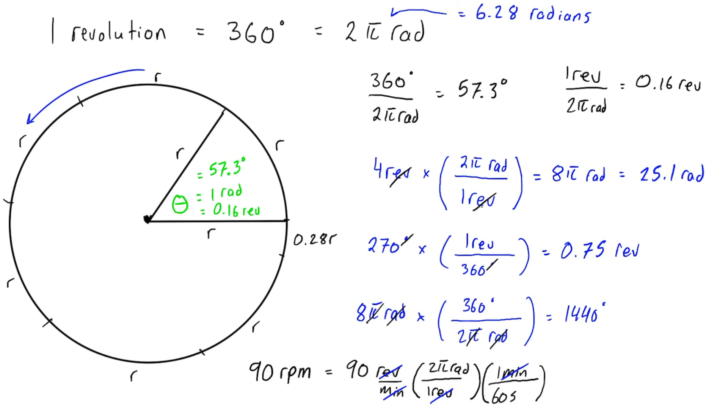We're going to be left with radians on the top and seconds on the bottom. When you multiply 90 times 2π divided by 60, we're left with 3π radians per second, or if you really want you can get rid of the π, but I don't recommend it, and have 9.4 approximately radians per second.